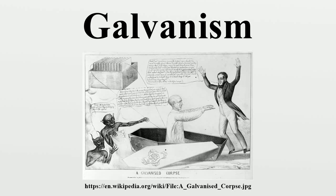In biology, galvanism is the contraction of a muscle that is stimulated by an electric current. In physics and chemistry, it is the induction of electrical current from a chemical reaction, typically between two chemicals with differing electronegativities.